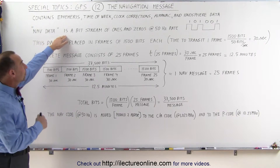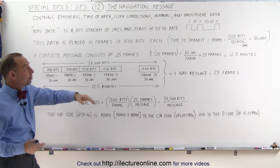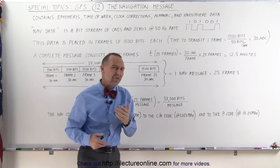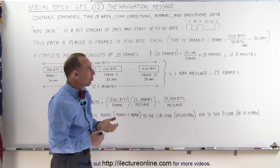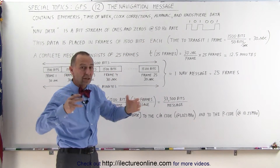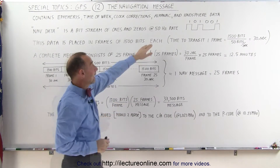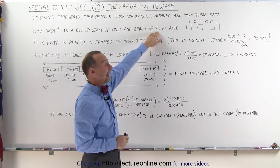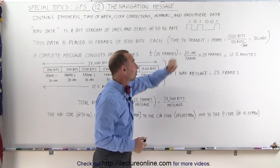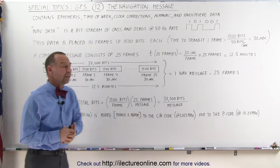The nav data is a simple bit stream of ones and zeros, and it runs at a 50 hertz rate, which is kind of strange. We have a navigation data set that contains a lot of information that the receivers need, and it sends it at a 50 hertz rate of ones and zeros. That means only 50 bits per second.